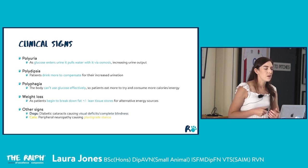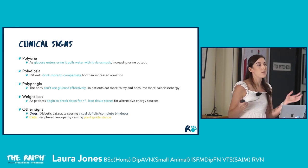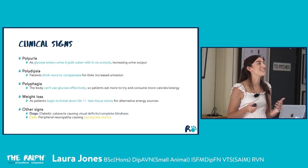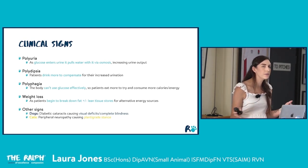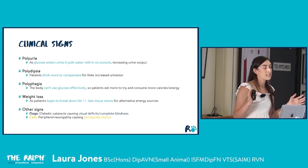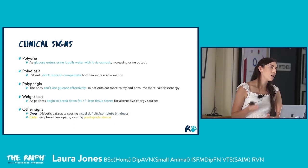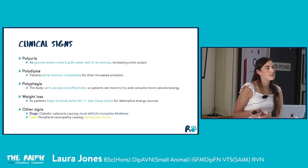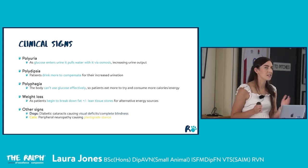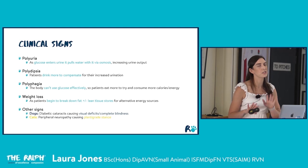Additional clinical signs include diabetic cataracts in dogs — all diabetic dogs will ultimately develop cataracts, something clients need to know. In cats, we can see peripheral neuropathy, presenting as a plantigrade stance where cats walk with their hocks flat to the ground.